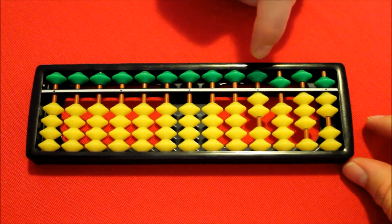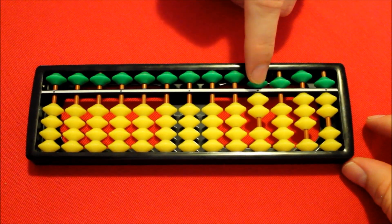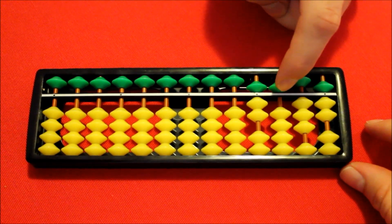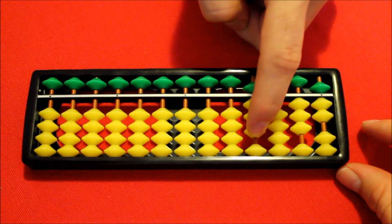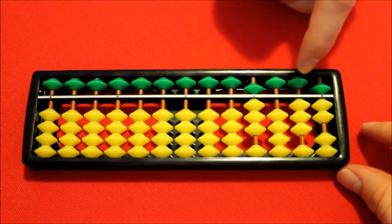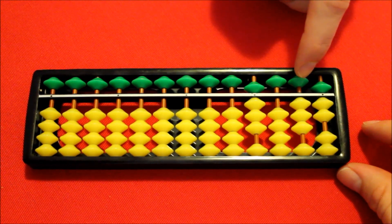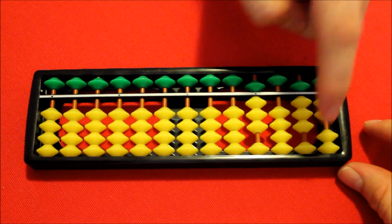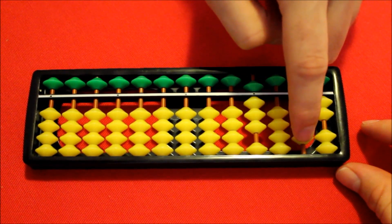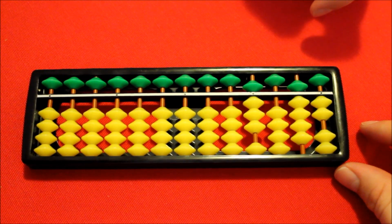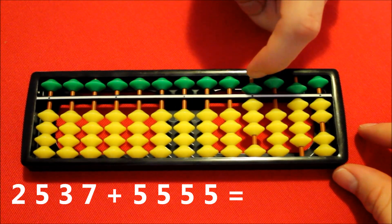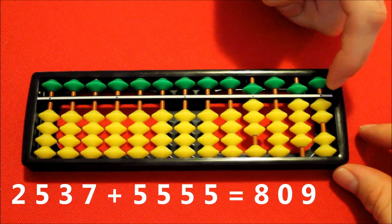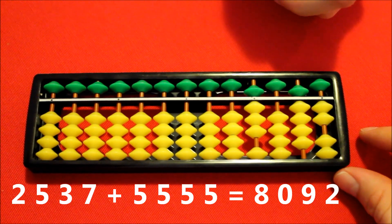So to begin with, nice and easy, adding five, down that goes. To this next column, I can't add five directly, so I'll subtract five and add my one to the next column. Now into the next column here, adding five once again, very simple, and then into the last column, subtract five, and add one to the next row, to the next column. So we're left with eight here, nothing on this one, nine on this one, two on this, that is eight thousand and ninety-two.